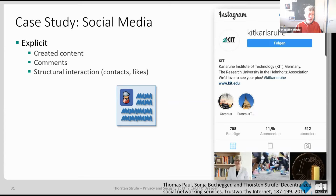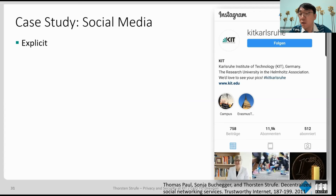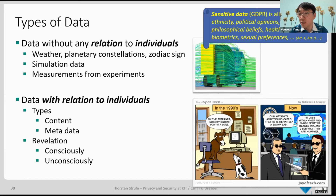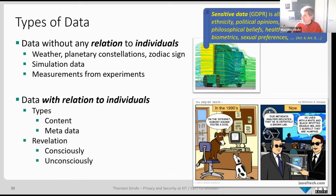Regarding neural network models in this categorization: the models themselves are just numbers, not related to a specific person. But if you look at how you obtain those numbers — they're derived from personal data. So which category do they belong to? There are two points: first, when training the model, you need data, and without user consent to use their data for training, you cannot train the model.